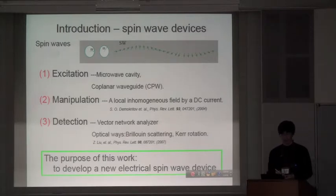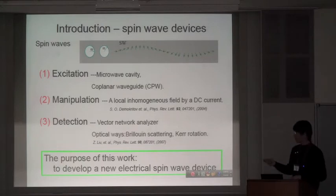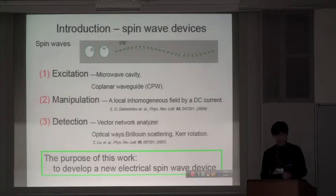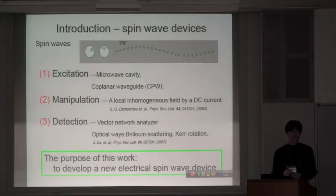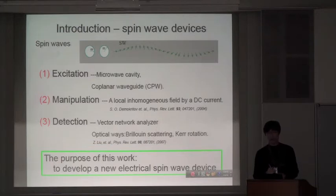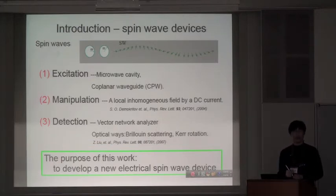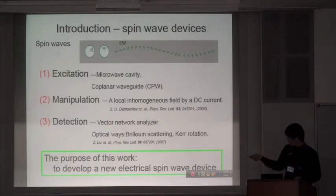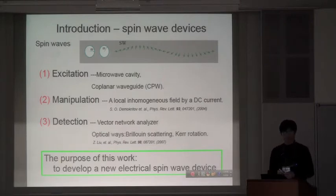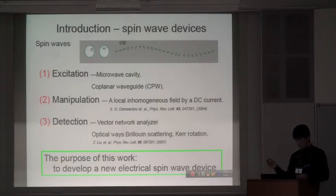It also has been studied, and lots of techniques developed to study this spin wave, for example, excitation by microwave using the microwave cavity or coplanar waveguide. The manipulator can be used as a local magnetic field, and also detected using vector network analysis. There's lots of optical ways, for example, Brillouin scattering, and time-resolved Kerr rotation is a good way to detect a spin wave. This work here, I will show you the purpose of this work: I developed a new electrical way to make a spin-wave device.